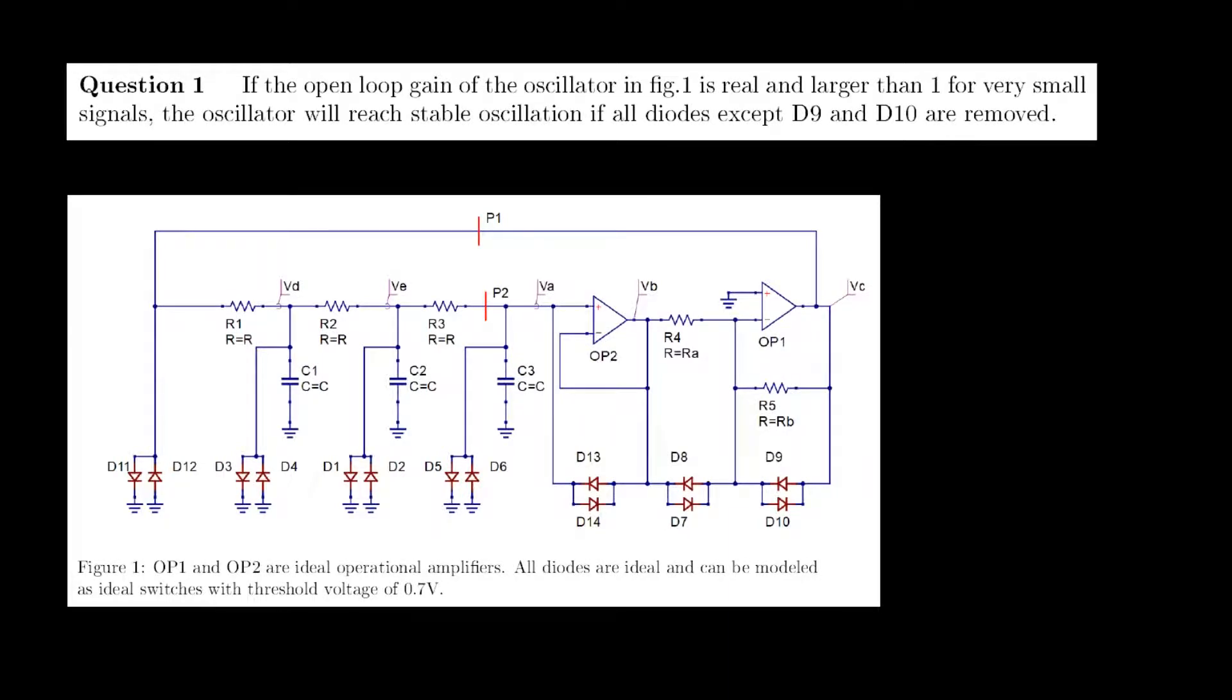This video will discuss question 1, which is a true-false statement: If the open loop gain of the oscillator in Figure 1 is real and larger than 1 for very small signals, the oscillator will reach stable oscillations if all diodes except D9 and D10 are removed.